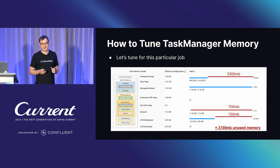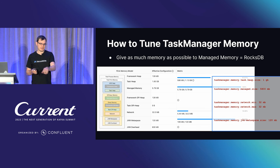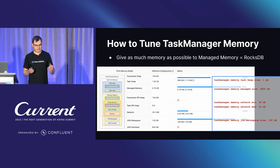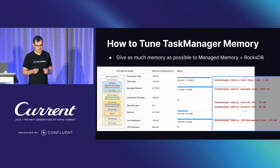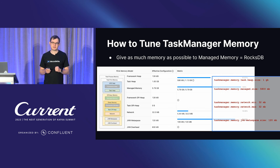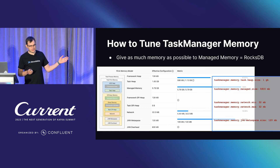You can interfere with Flink's memory model to better match your use case. For example, limit the task heap to 1GB and give RocksDB — in Flink terms called managed memory — 5.8GB. With these configuration settings, you end up with a much more optimized task manager where the majority of memory is allocated to RocksDB, which uses it for caching so most key-value lookups are served from memory rather than disk.